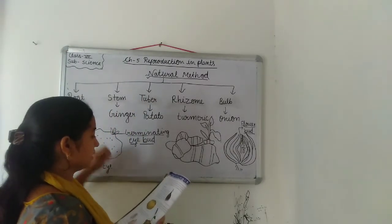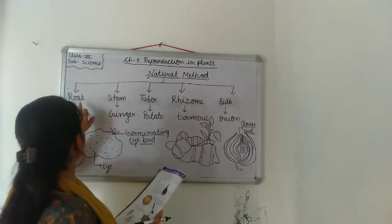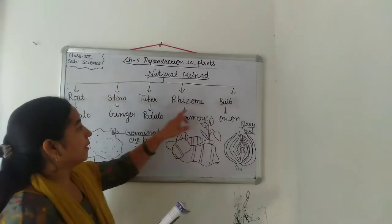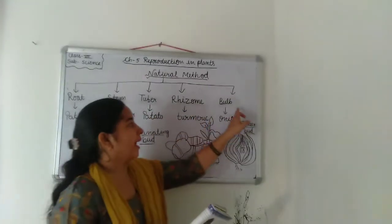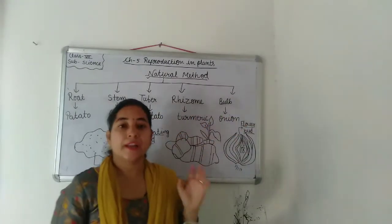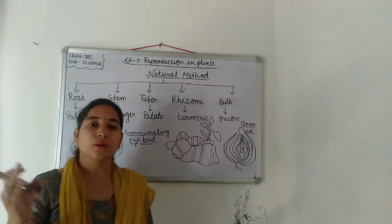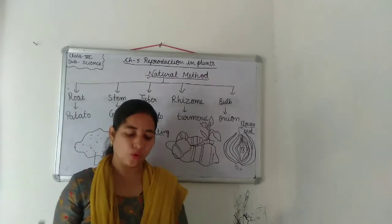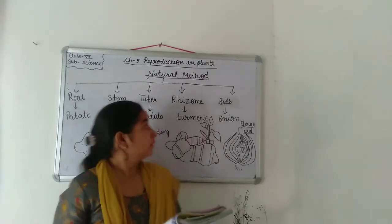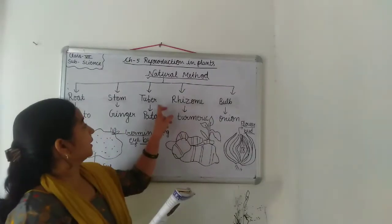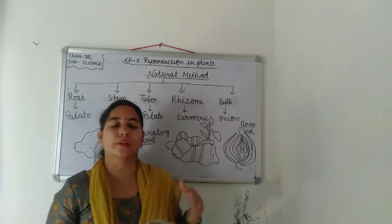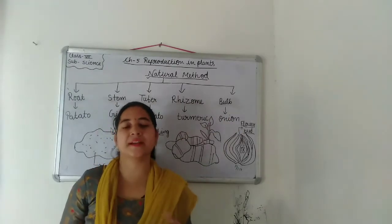Natural methods are done by root, stem, tuber, rhizome, and bulb. Natural methods — roots ke dwara, stem ke through, tuber ke through, rhizome and bulb ke through natural methods kiya jata hai.